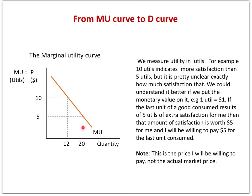When I consume the 20th unit of a good, I get so much satisfaction from consuming that additional unit that for me it is worth 5 dollars, and I will be willing to pay 5 dollars to buy the 20th unit of this good. So the less satisfaction I get from consuming an additional unit, the less I will be willing to pay.